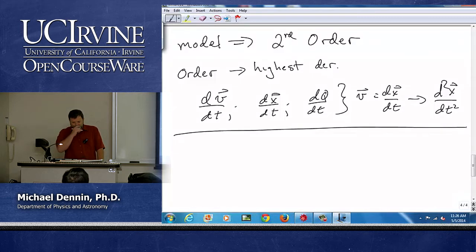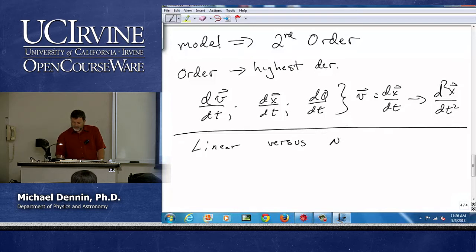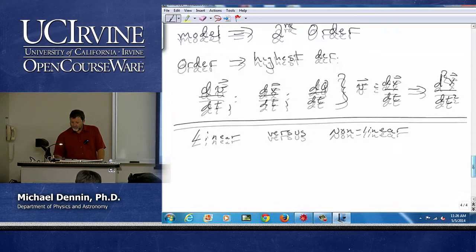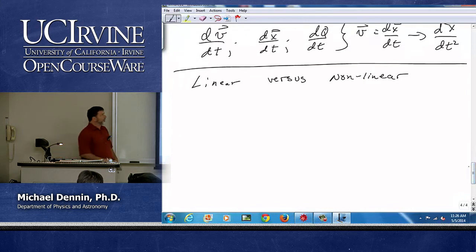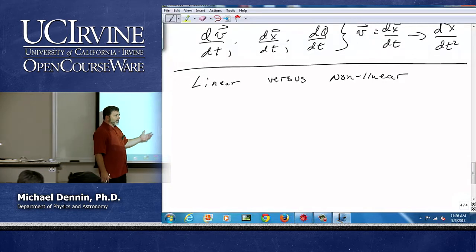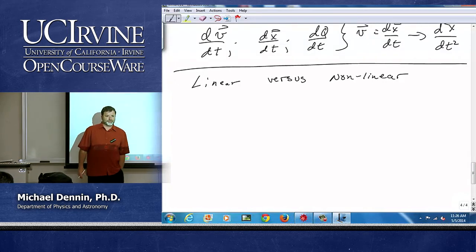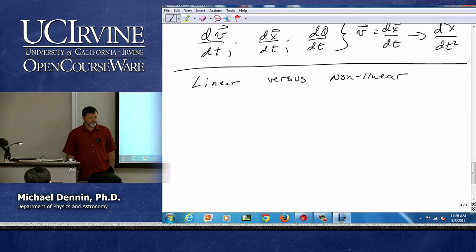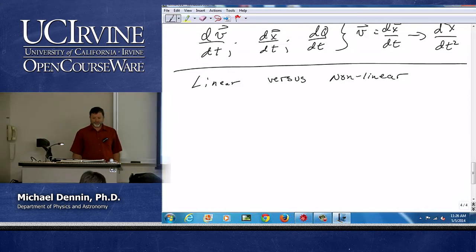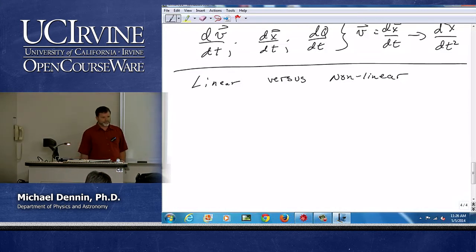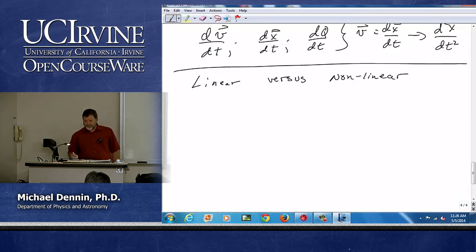The other distinguishing feature is linear versus nonlinear. So what would determine if an equation is linear or if it's nonlinear? Student: There's more than one dependent factor, like the humans and zombies being multiplied. Okay, so that had two variables being multiplied. So let's ask this question.